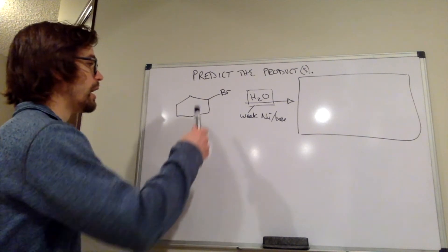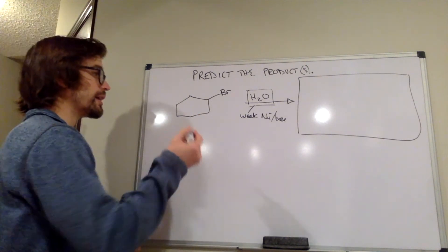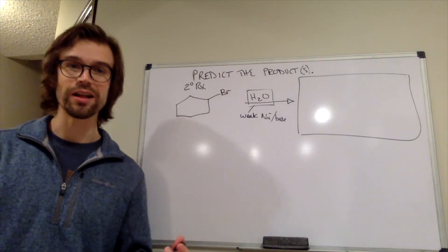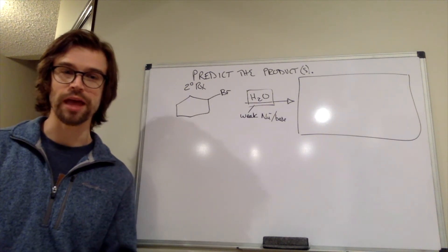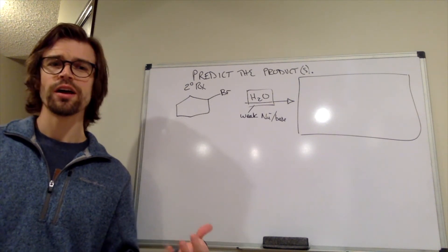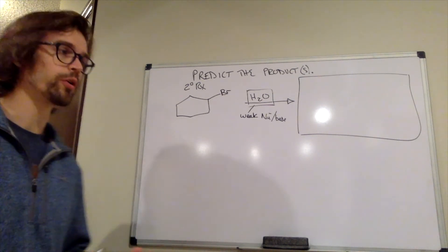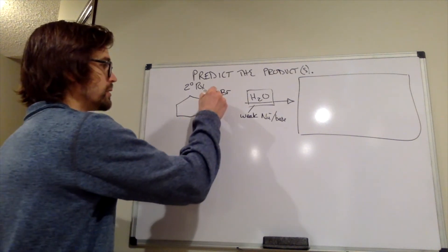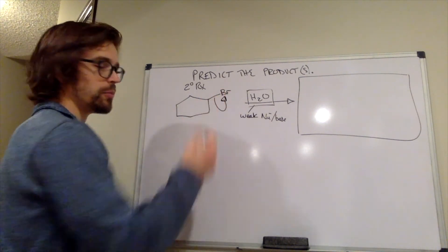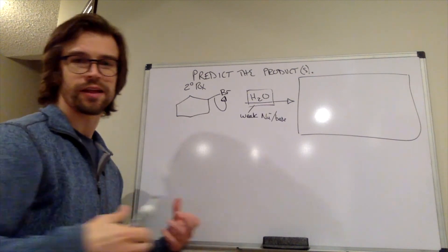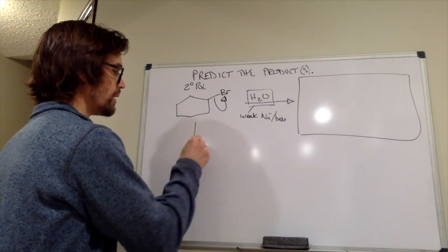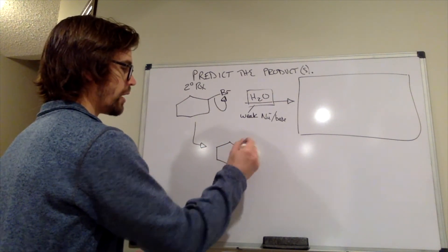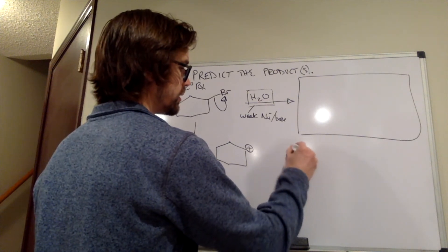So what do we have here? We have an alkyl bromide. And if we had to classify this, this is a secondary alkyl bromide. While a secondary carbocation is not the most stable type of carbocation, it is still stable enough to form. So it's not going to form at an outrageous rate, but it will form at some rate. So this will form a carbocation. This bromine really wants all those electrons. It wants to take them and have its own octet. So when it does that, it's going to form this carbocation, and Br minus as well.